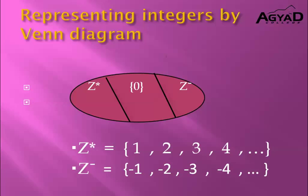Now we are going to represent the set of integers using a Venn diagram. You can draw any figure and divide it into three sets: Z positive, the set {0}, and Z negative. This figure is called a Venn diagram representing the set of integers. Let's remember: Z equals Z positive union the set {0} union Z negative.